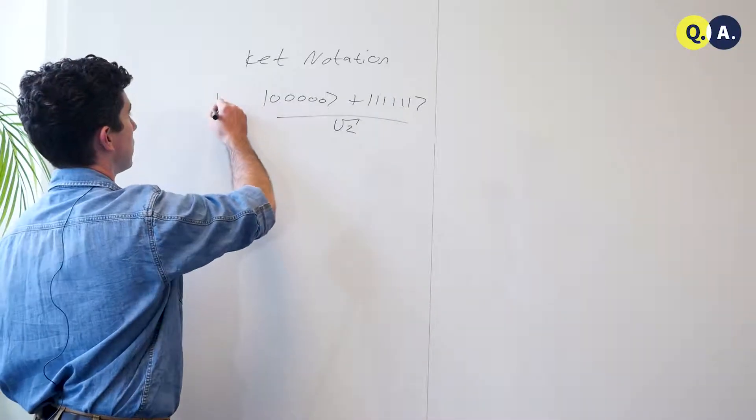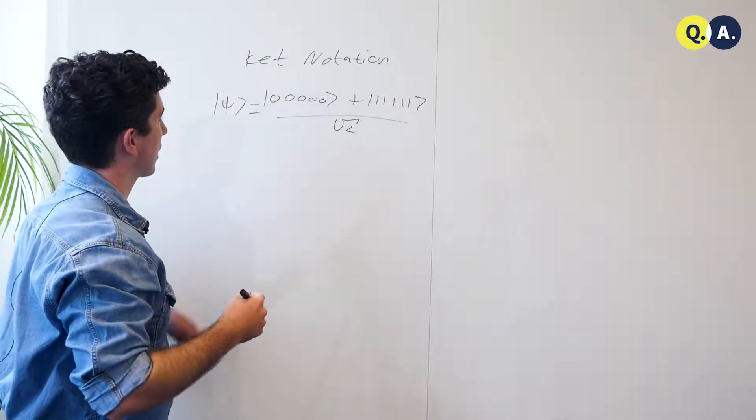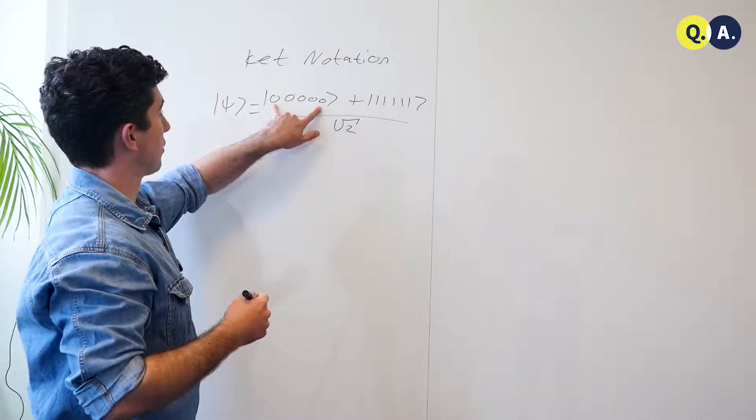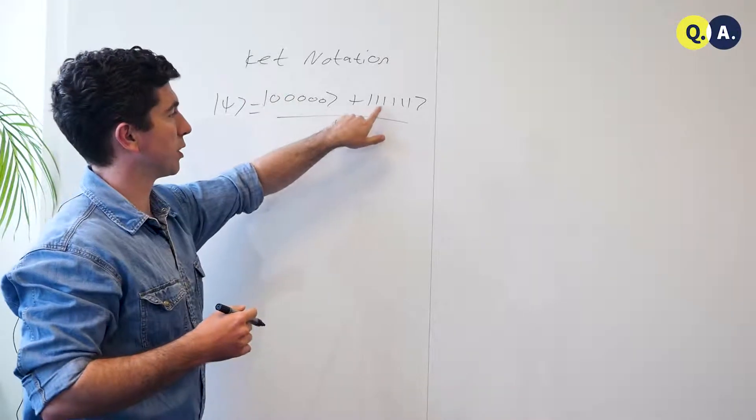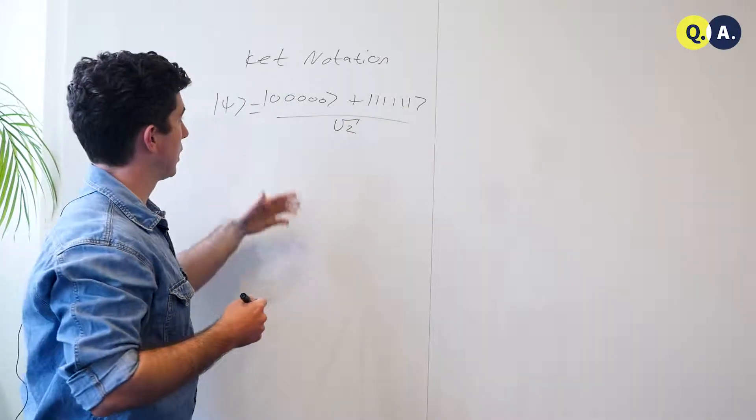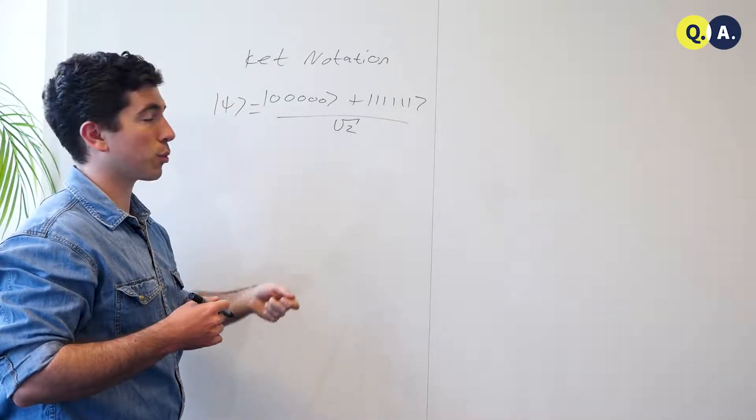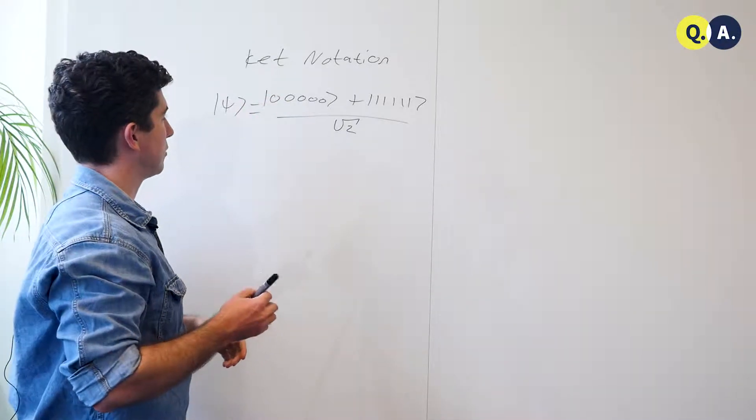Take, for example, this state here, which I'll call psi along with most other states. It's got two non-zero terms. There's a one over root two term for the component in |00000⟩, and a one over root two term for the all ones as well. This would be very cumbersome to write out in terms of a full vector, because that will require two to the five or thirty-two entries. But here you can do it very compactly.